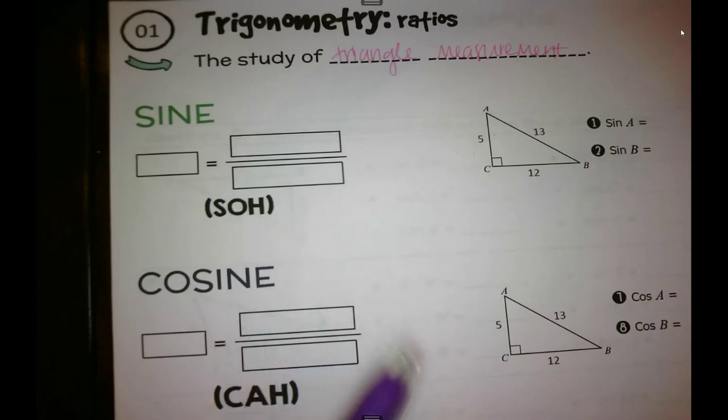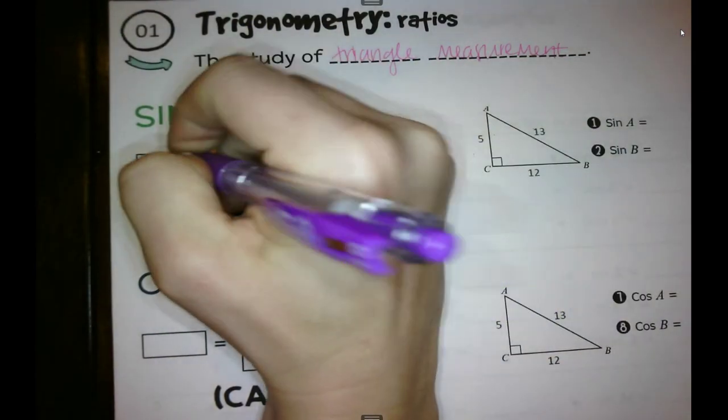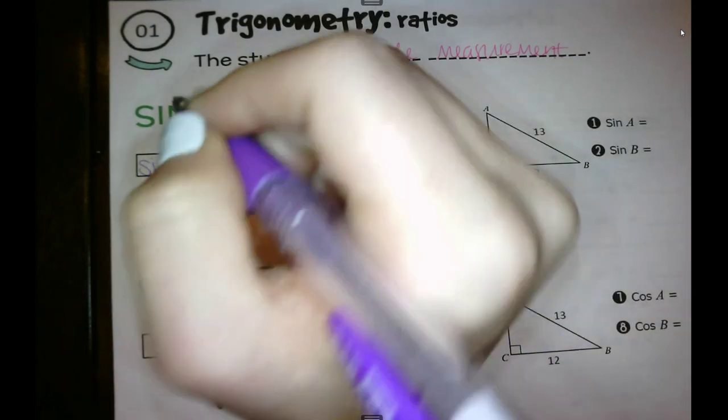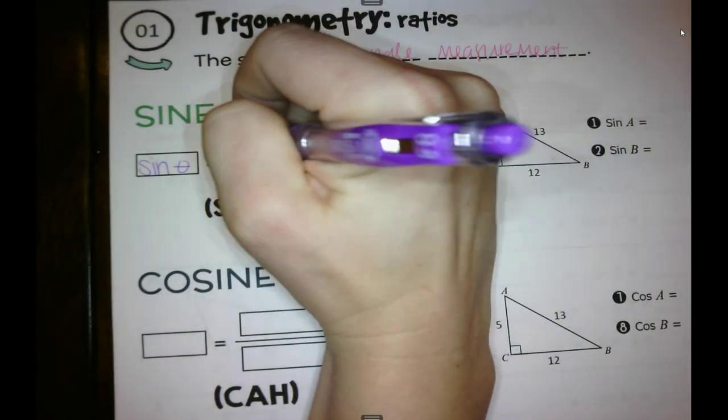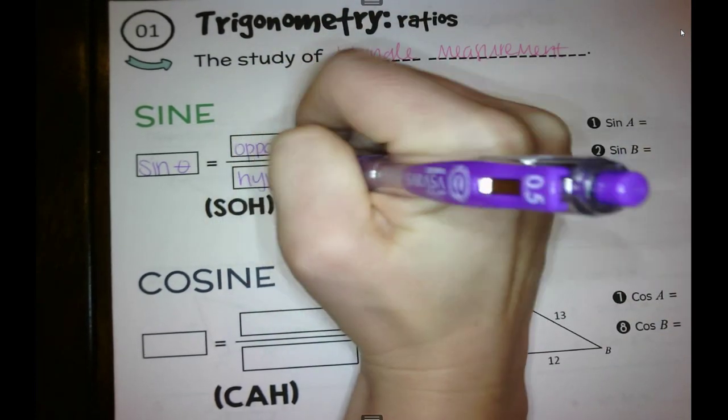So let's break each of them down and what they mean. So we abbreviate sine with S-I-N. It is sine, not sin. Don't say sin. So sine of theta, this just means an angle, equals the opposite over the hypotenuse.